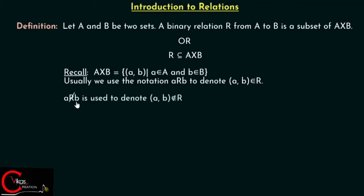A is not related to B is used to denote that (a, b) does not belong to R. So these are the notations we must remember. Apart from this, we must remember that R is a subset of A cross B if R is defined from A to B.